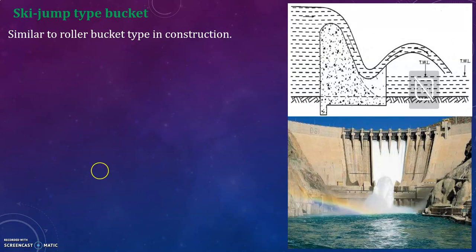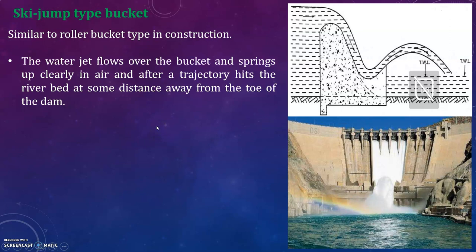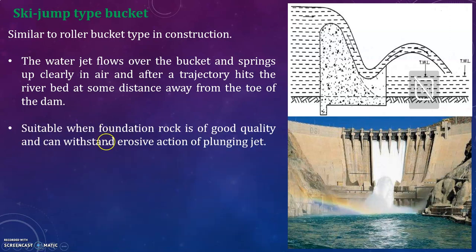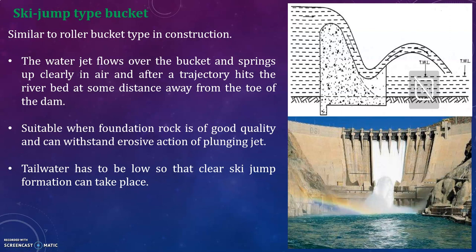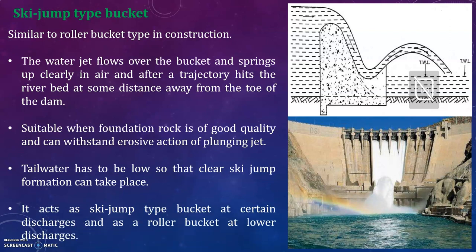The ski jump type bucket is similar to the roller bucket type in construction. The water jet flows over the bucket and springs up clearly in the air, and after a trajectory hits the river bed at some distance away from the toe of the dam. It is suitable when the foundation rock is of good quality and can withstand the erosive action of the plunging jet. Tail water has to be low so that clear ski jump formation can take place. It acts as a ski jump type bucket at certain discharges and as a roller bucket at lower discharges.